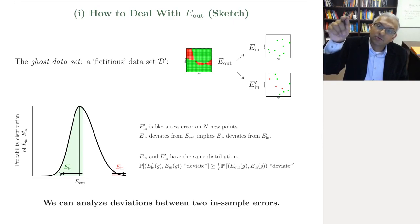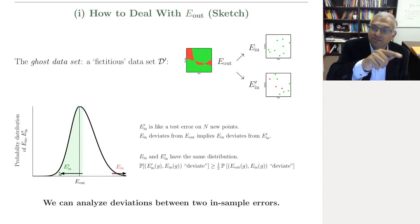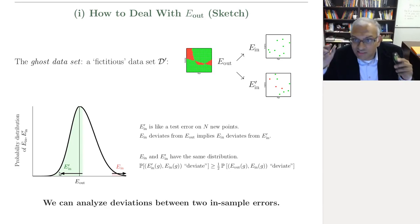And so all we have to do is analyze the deviations between these two in-sample errors. On one of the samples, you picked g from the hypothesis set. On the other sample, you just think of it as you're just testing.